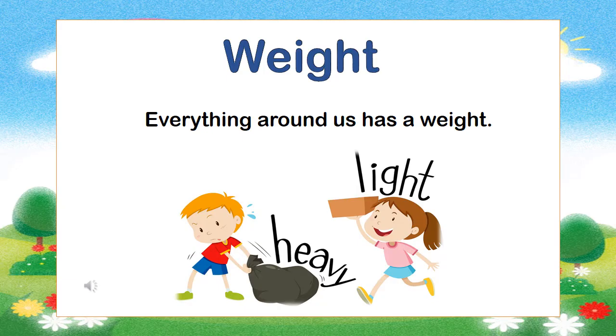Everything around us has a weight. Some objects around us are heavy. For example, a stone. Some objects are very light. For example, a feather.